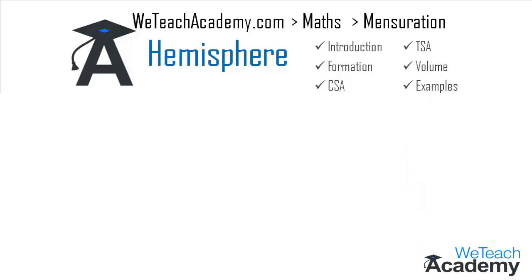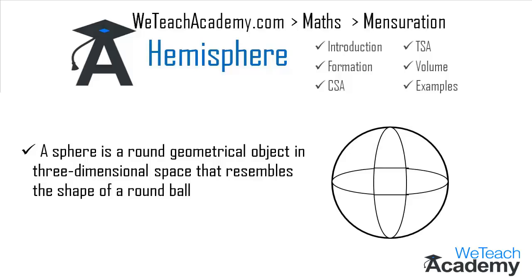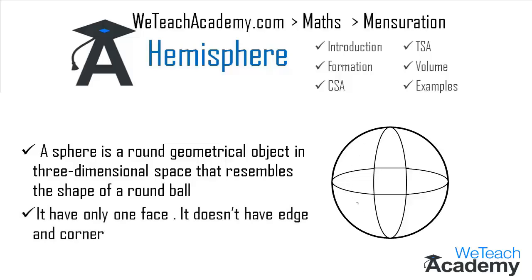First, let me define a sphere. A sphere is a round geometrical object in three-dimensional space that resembles the shape of a round ball. A sphere has only one face and it doesn't have any edge or corner.